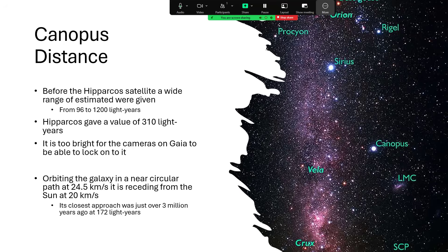It's too bright for the cameras on Gaia to be able to lock onto it properly and give us parallax from that. So we're still dependent on the value of 310 light years from Hipparcos.